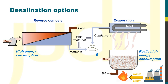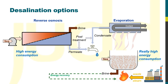For both processes, energy consumption is reduced by recovering energy from the brine stream. In the case of evaporation, energy is recovered in the form of heat from the brine through a series of evaporative stages. The potential heat energy or power recovery is then proportional to the difference in temperature between the initial brine temperature and the final temperature at which it's discharged.